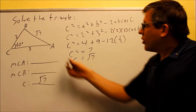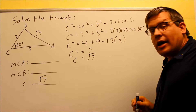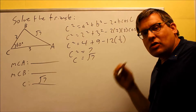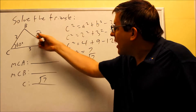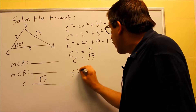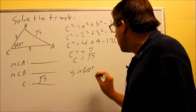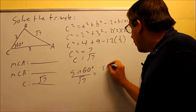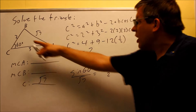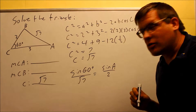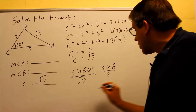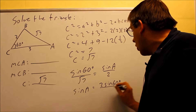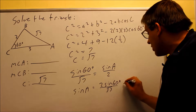Next, we want to find one of the two remaining angles. Going for angle A, we now have a side opposite a given angle, so we can use the law of sines. We start with our given ratio: sine 60 over the square root of 7. Then we set that equal to sine A over 2, because 2 is the side opposite angle A. Cross multiplying and solving, we get sine A equals 2 sine 60 over the square root of 7.